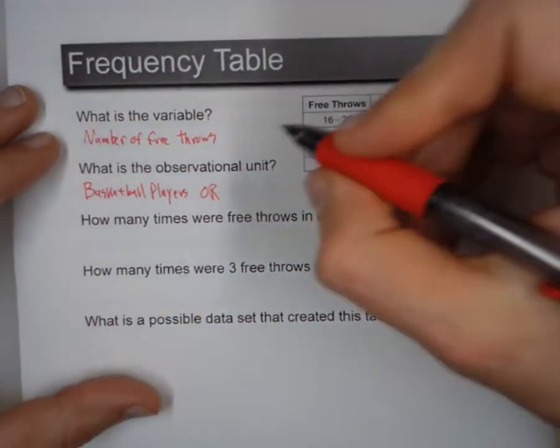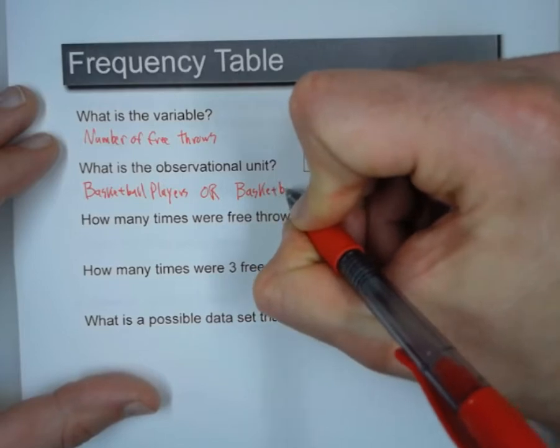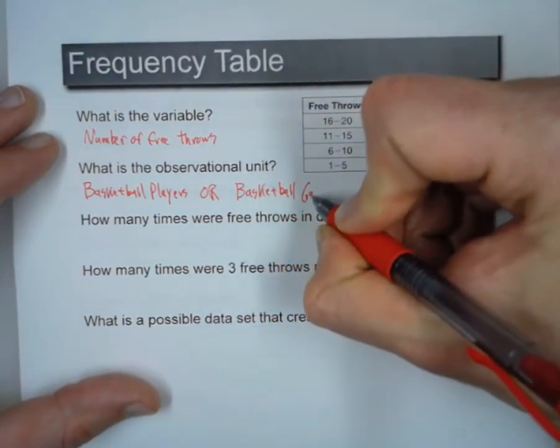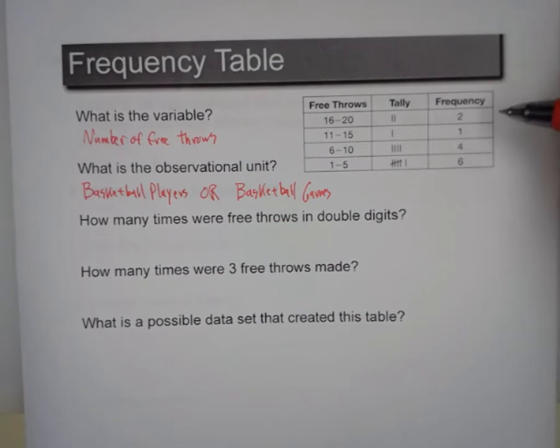Or there's another possibility: basketball games. These could be the stats for a single player across a season of games. And because the table doesn't say either way, both of these are equally viable options.